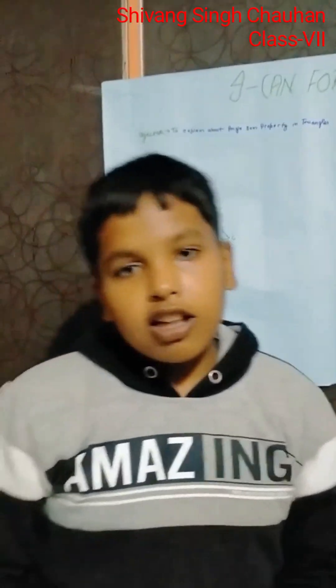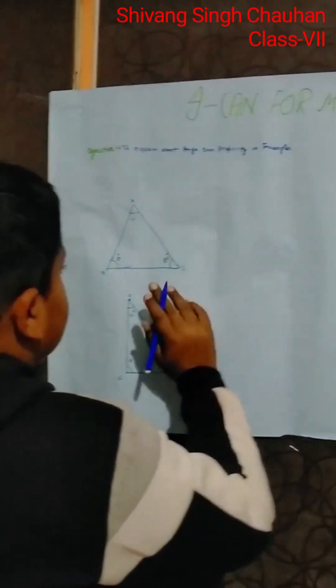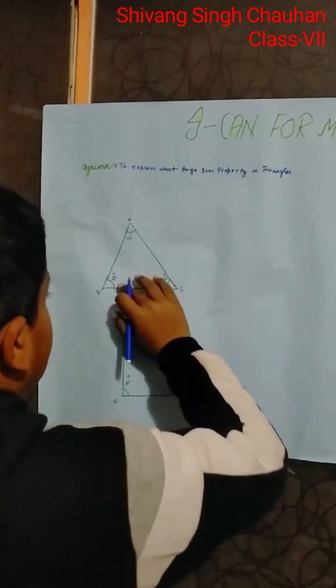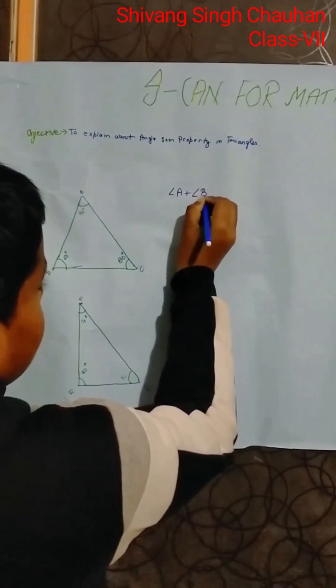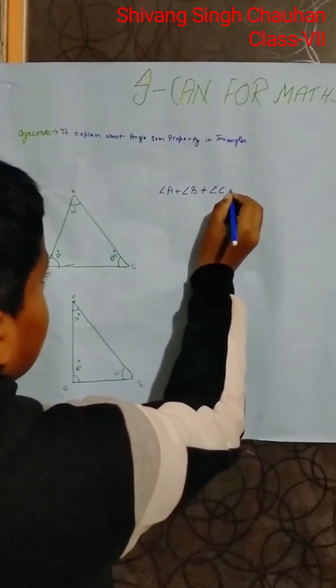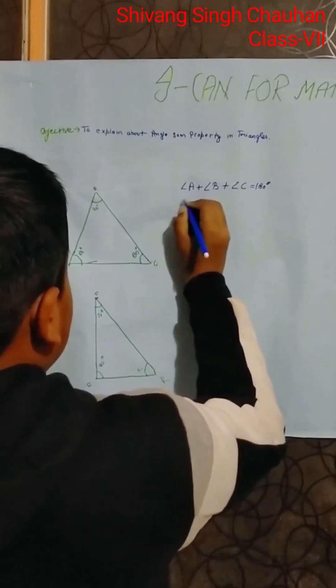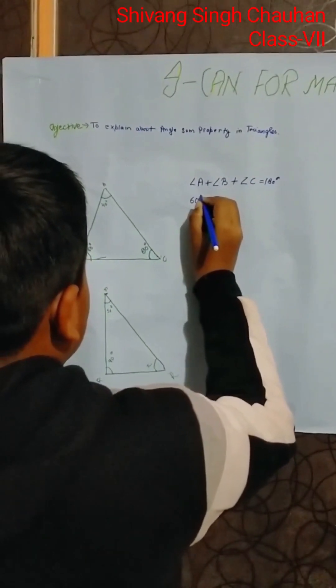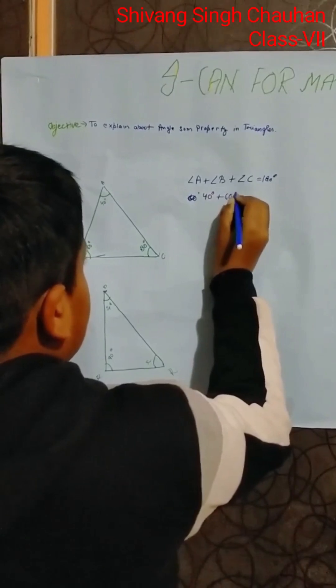Let us see with one example, then we will learn how to find the unknown value of angles. So here, the first example is a scalene triangle. You can see that Angle A plus Angle B plus Angle C equals to 180 degrees. Angle A equals to 40 degrees, B equals to 60 degrees, and C equals to 80 degrees.